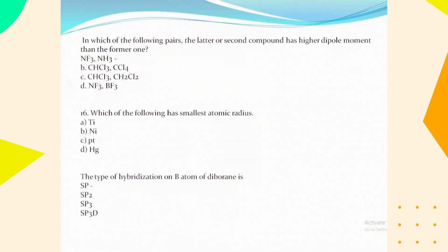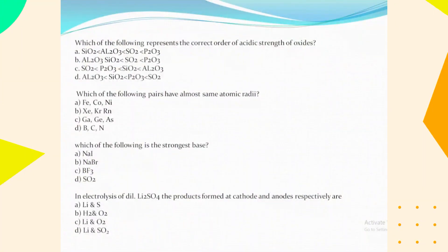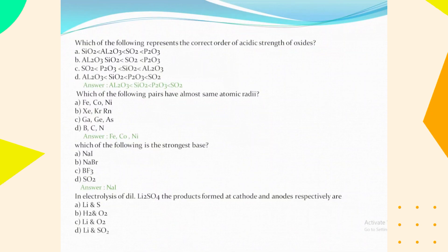In the pair where the second compound has a higher dipole moment than the first, the answer is NF₃ and NH₃. The element with the smallest atomic radius is nickel. The type of hybridization of the boron atom in diborane is sp³. The correct order of acidic strength of oxides is: Al₂O₃ < SiO₂ < P₂O₃ < SO₂. The pair with almost the same atomic radii is Fe, Co, Ni (iron, cobalt, nickel). The strongest base among the options is NaI (sodium iodide). In electrolysis of dilute H₂SO₄, the products formed at the cathode and anode respectively are H₂ and O₂, since it is essentially electrolysis of water.